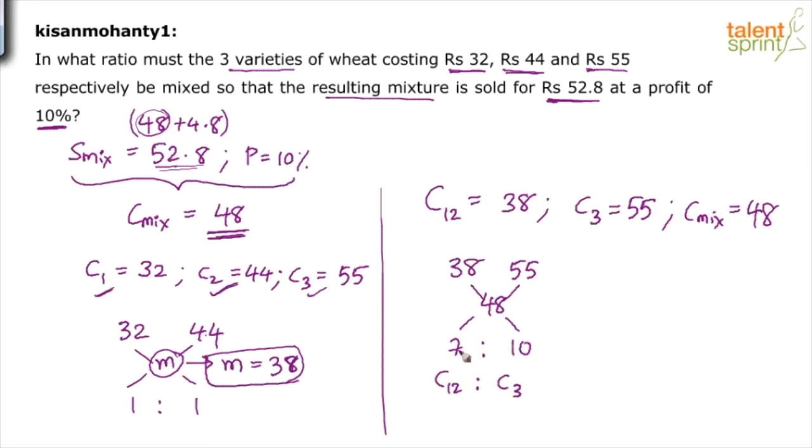But understand that the C12 has got 1 and 2 both in equal proportion. We have taken equal proportion, 1 is to 1. That means out of the 7 parts, 3.5 parts are C1 and the other 3.5 parts are C2. So I can conclude that C1 is to C2 is to C3 is equal to 3.5 is to 3.5 is to 10. I am just breaking 7 into 2 parts, 3.5 and 3.5. Which is equal to 7 is to 7 is to 20.